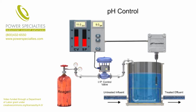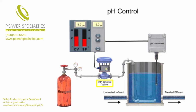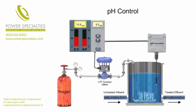With the pH level at 11 detected by the sensor, the controller commands the control valve to open and introduce more carbon dioxide. As the increased carbon dioxide mixes with the influent, the pH is lowered in a controlled manner.